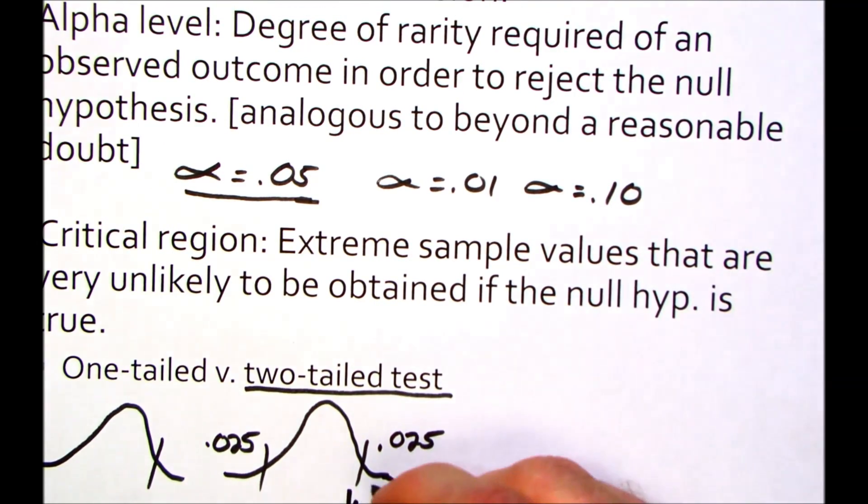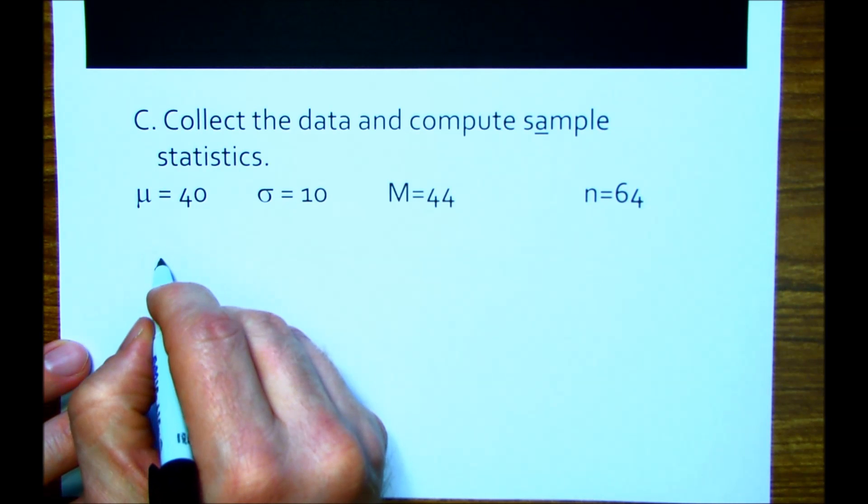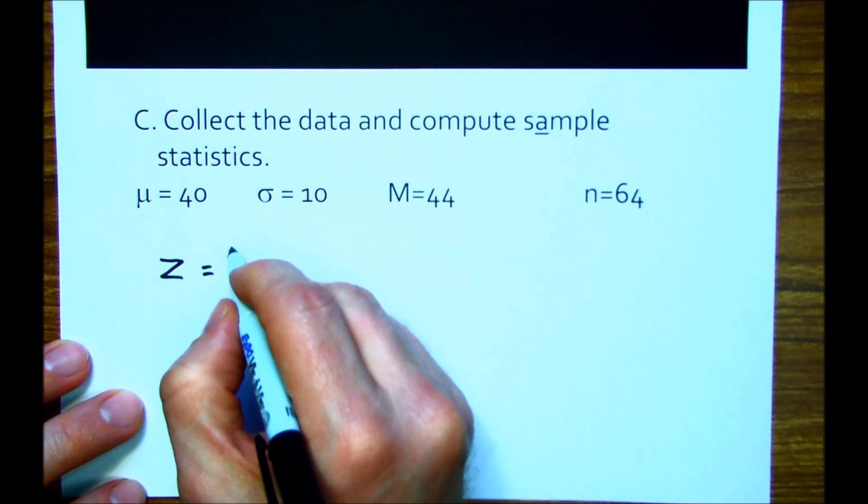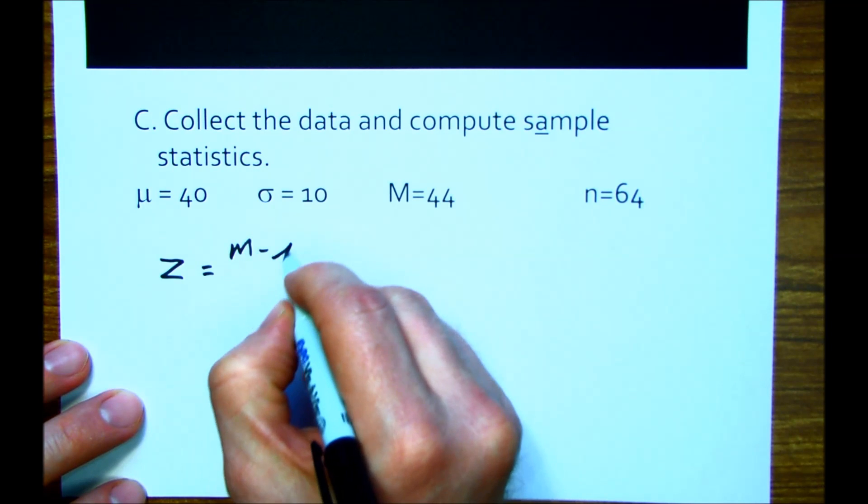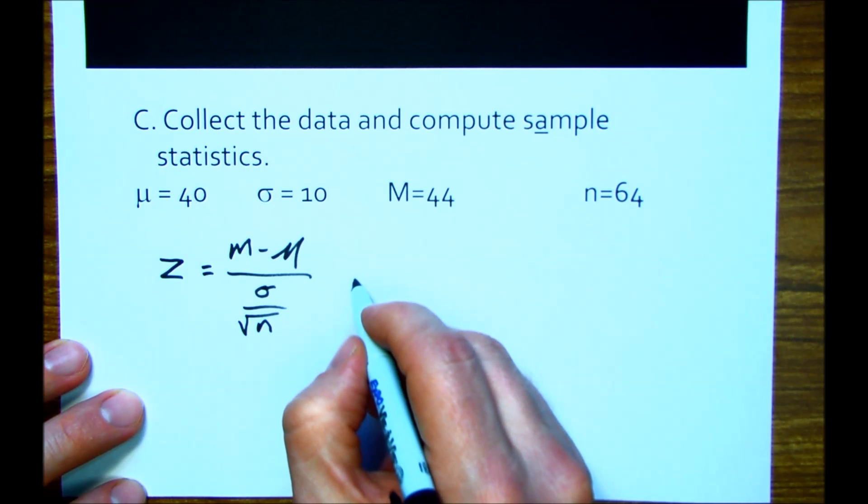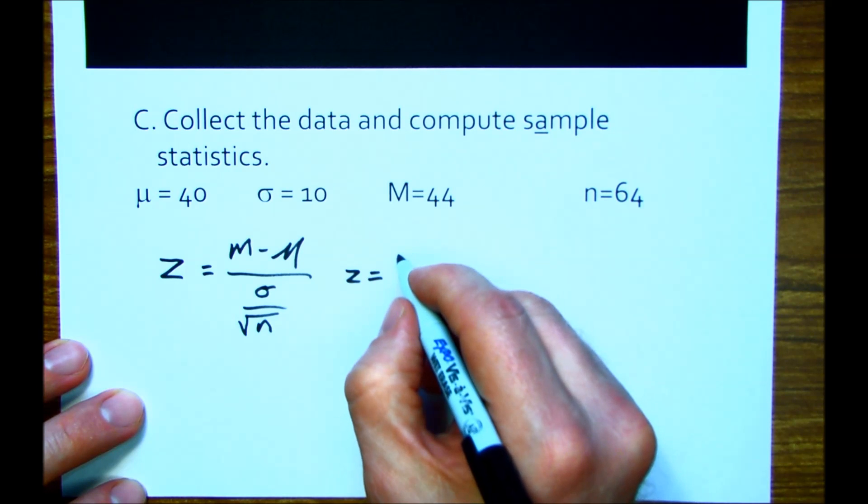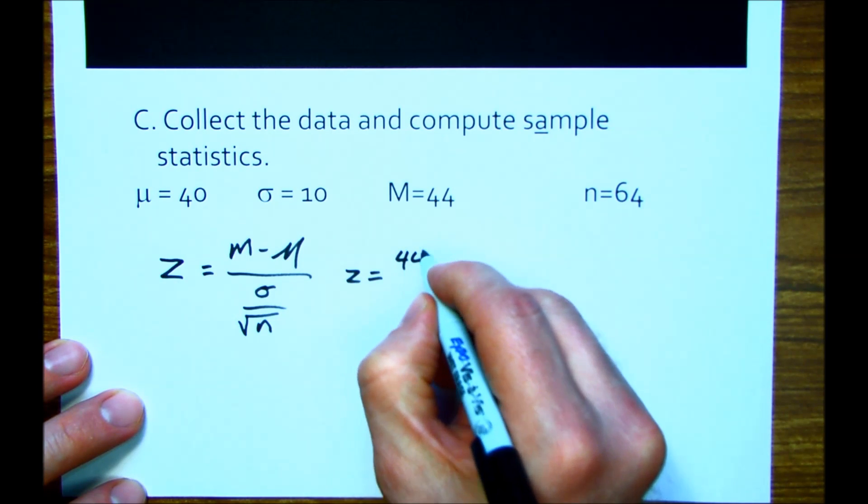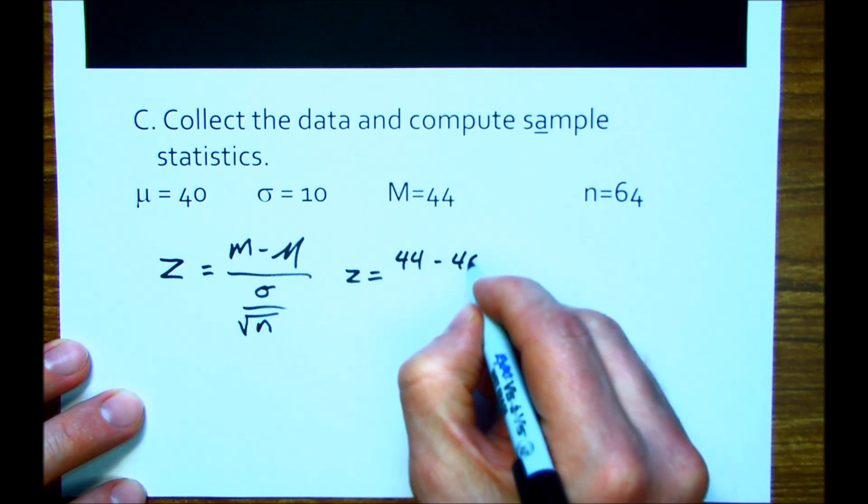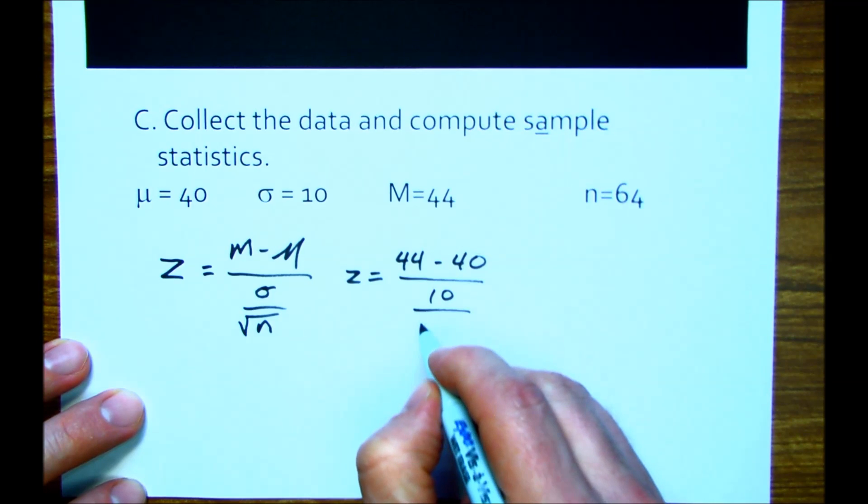So the first is to state the hypotheses. And so we have what's called the null hypothesis. Null, a mnemonic device for this is null means no, there's no difference between groups. The treatment has no effect. And our symbol for this is H sub zero. So this is analogous to the presumption of innocence in a court of law. So we assume that the treatment has no effect until we have enough evidence to say that it does have an effect. Just like we assume that somebody is not guilty until we have enough evidence to say that the individual is guilty.